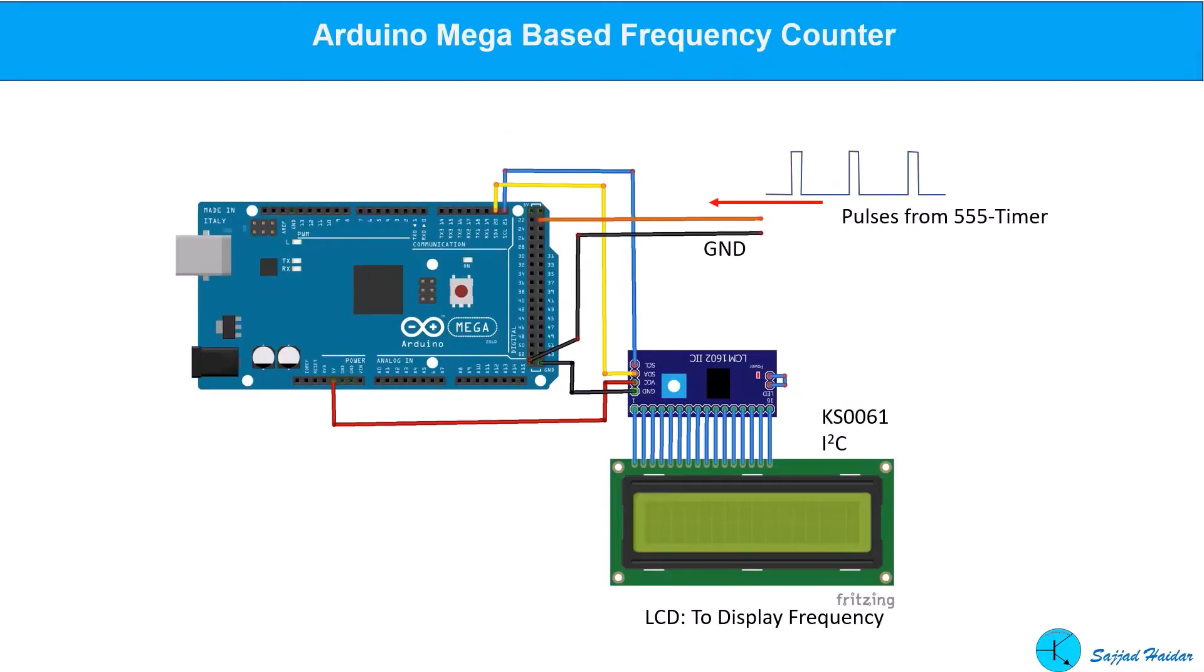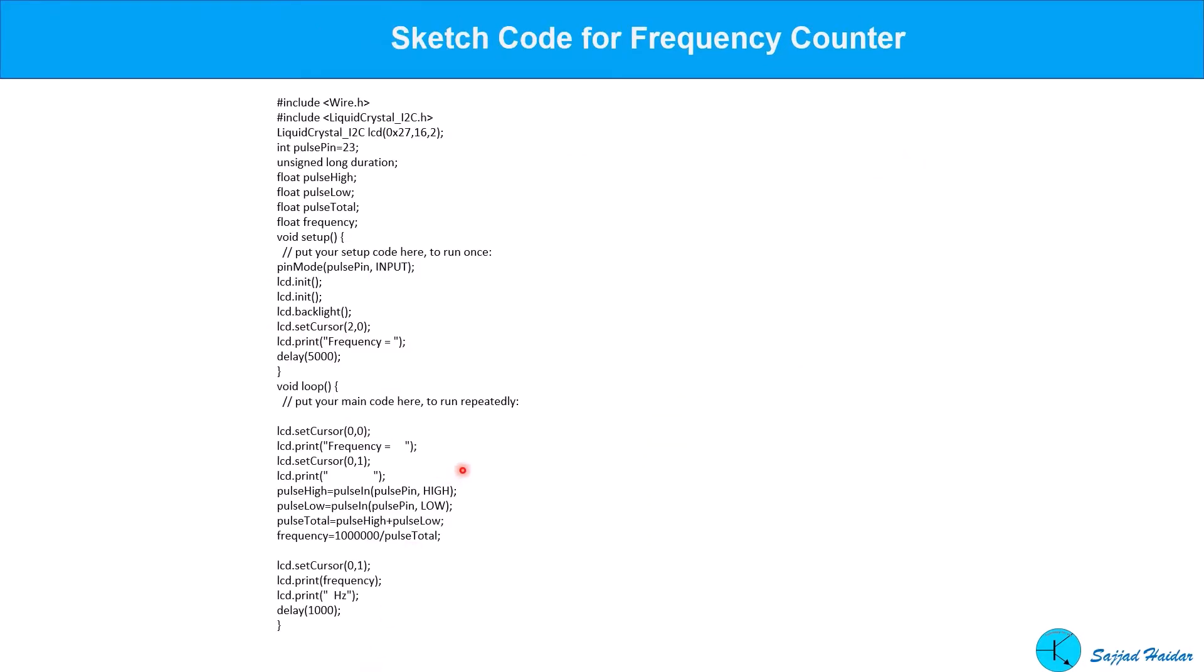Arduino mega board is used to display the frequency. I used an I2C display. And the pin number 23 digital input is used as the pulse input. Code is very simple. Just a few lines.